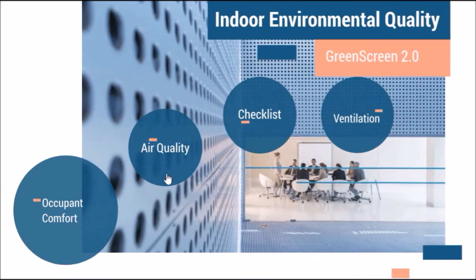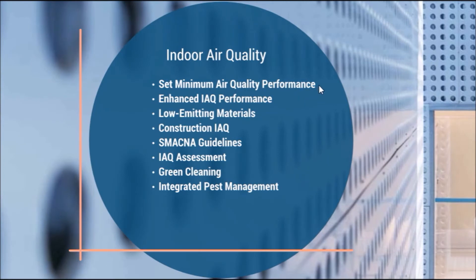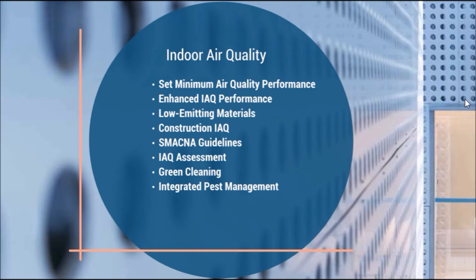Now we head into air quality itself. We want to set the minimum air quality performance according to the prerequisite. Mechanical and natural ventilation standards must be in place under ASHRAE 62.1. For enhanced IAQ strategies, these can use mechanical, natural, or usually mixed-mode ventilation. Mechanical ventilation uses an HVAC or mechanical system, whereas natural ventilation uses passive designs and operable windows. Controlled tobacco smoke is very important — smoking areas must be placed at least 25 feet away from a building's air intake or operable windows so smoke doesn't enter the building.